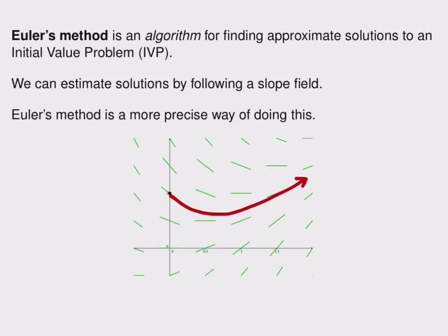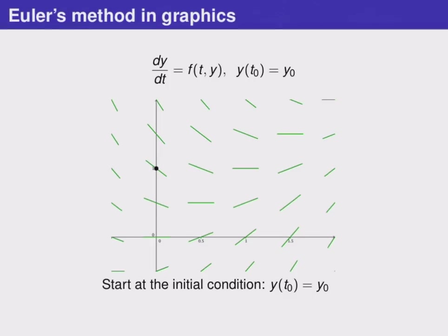Euler's method is named after a famous mathematician named Leonard Euler, and his name is pronounced Euler. Right now, you should pause the video and say Euler out loud five times until you start to get used to it.